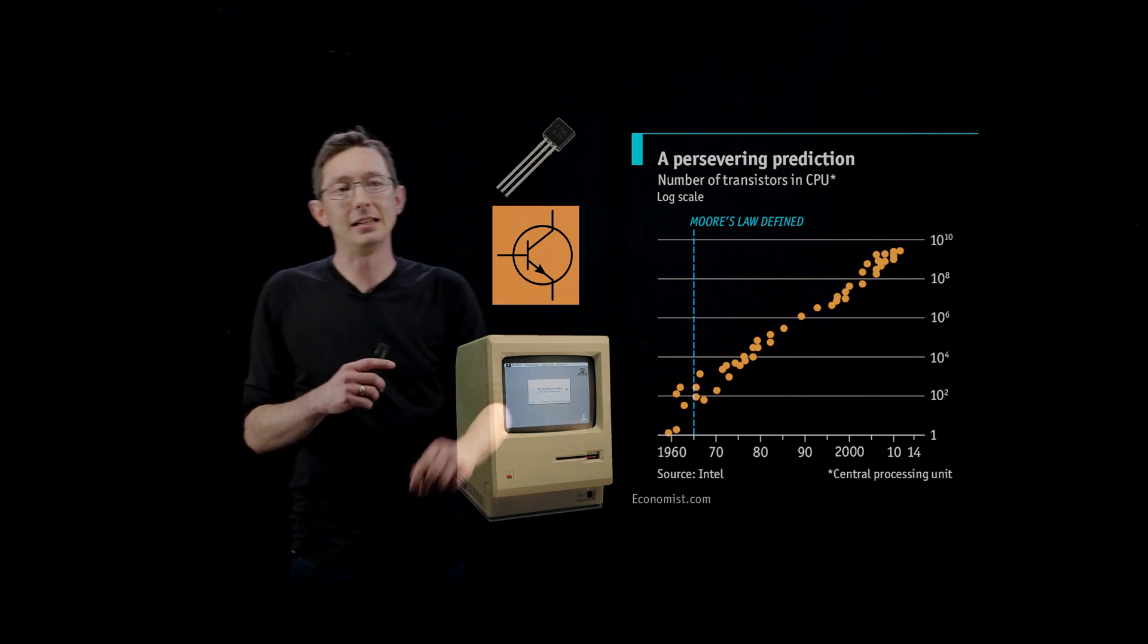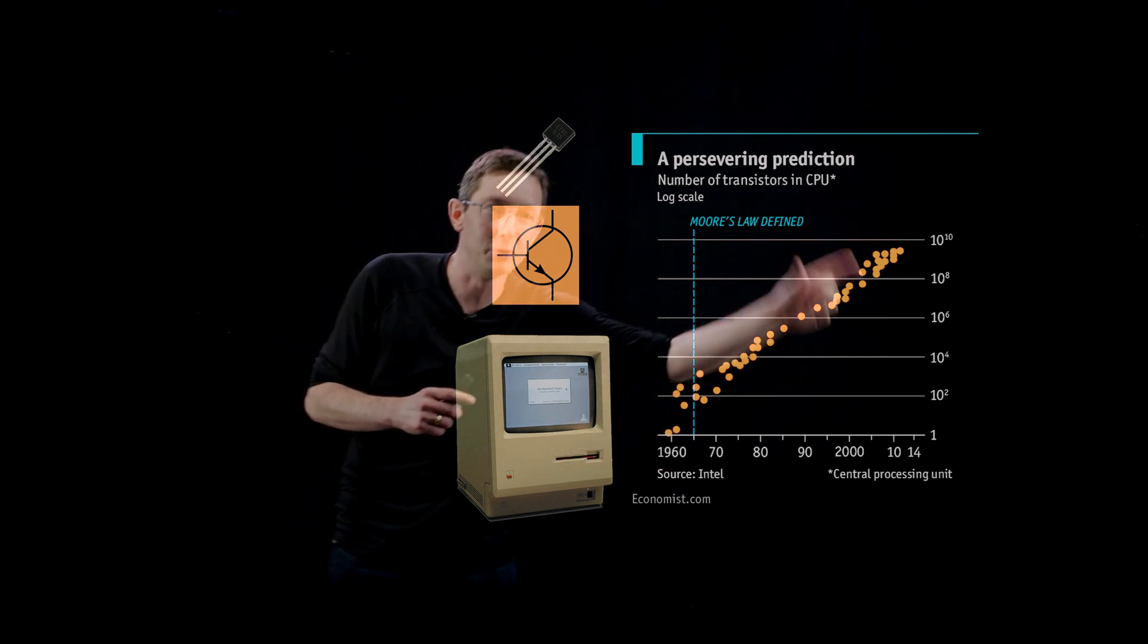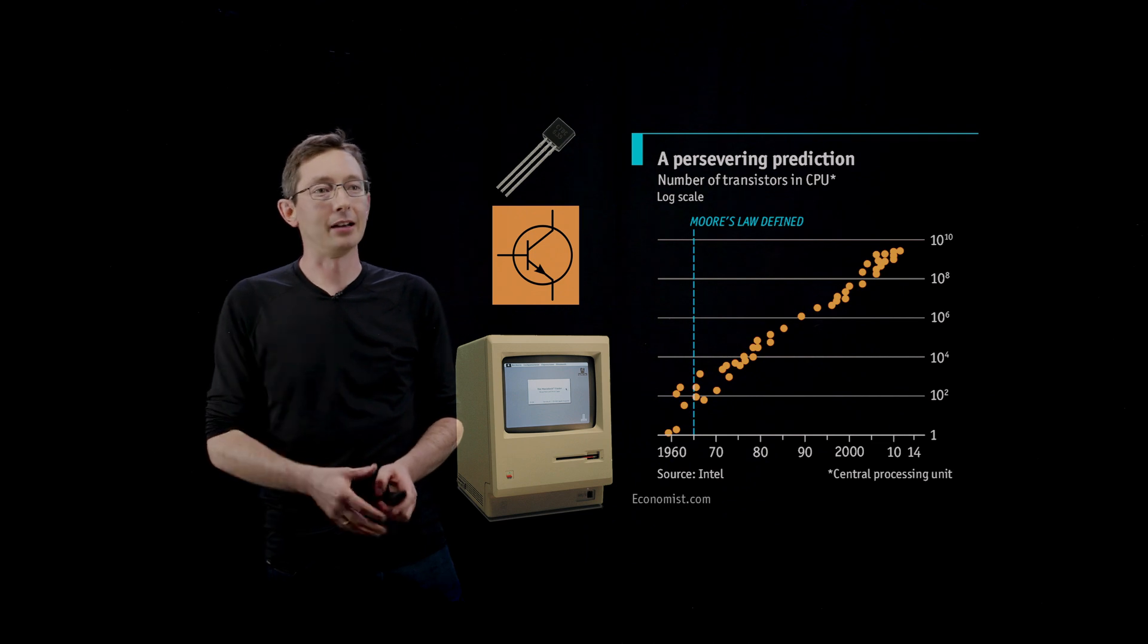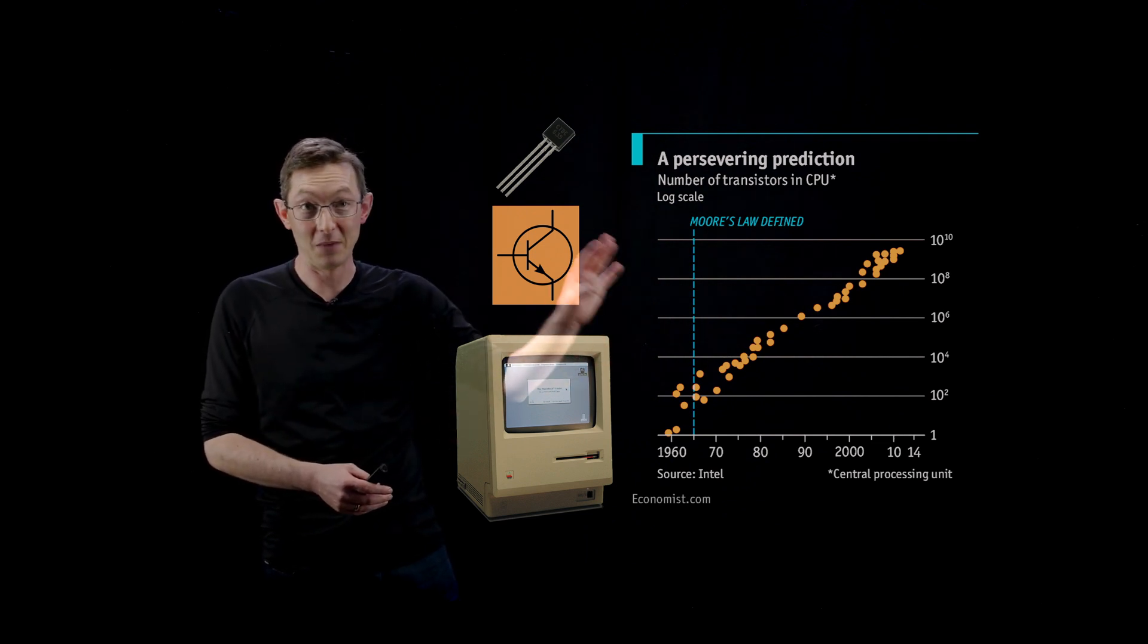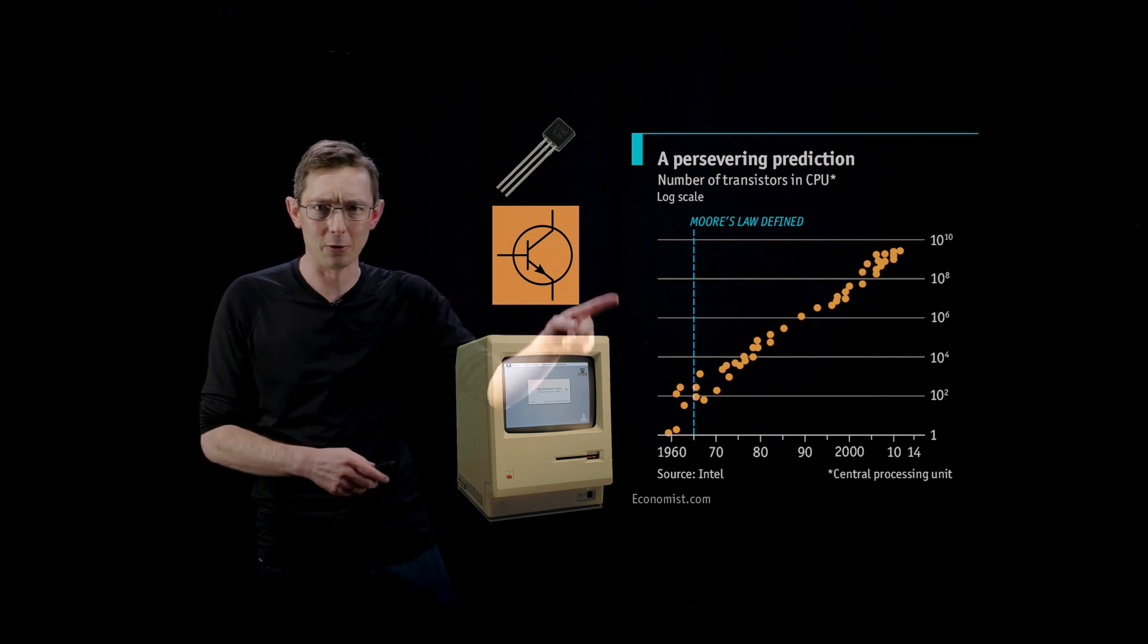Moore defined this law in 1965 with this much information. And it's been true for the next 50 years. I mean, that blows my mind that Moore's law is true, first of all, but that Moore predicted it that far ago. Very cool.